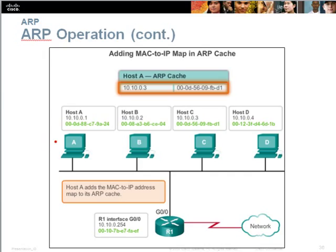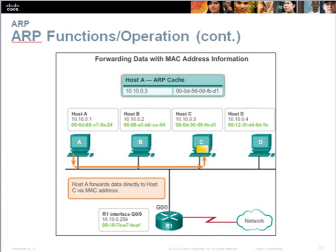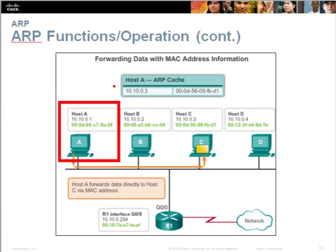Upon receiving the ARP reply, host A updates the ARP cache with host C's IP address 10.10.0.3 and its corresponding MAC address. When host A tries to send another data packet to that destination, it no longer needs to do an ARP broadcast, because the ARP table already contains the IP address and MAC address for host C. It will send the data directly to host C.